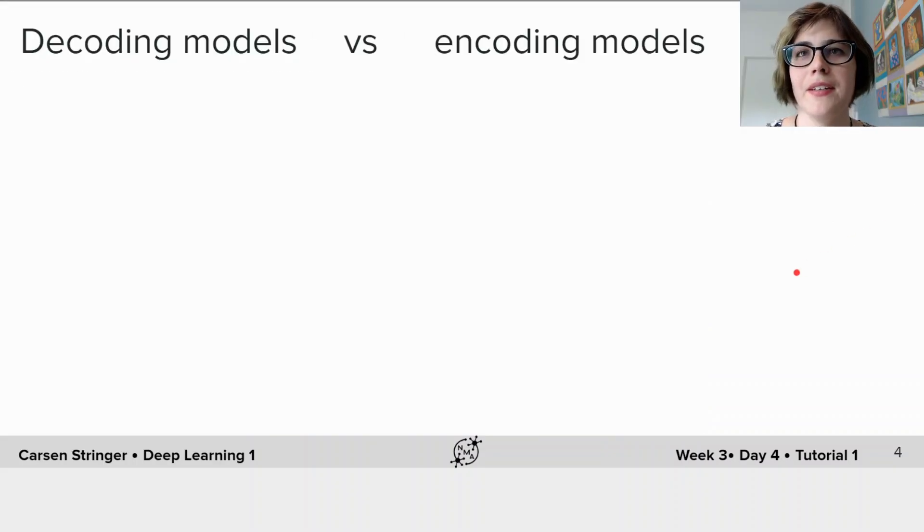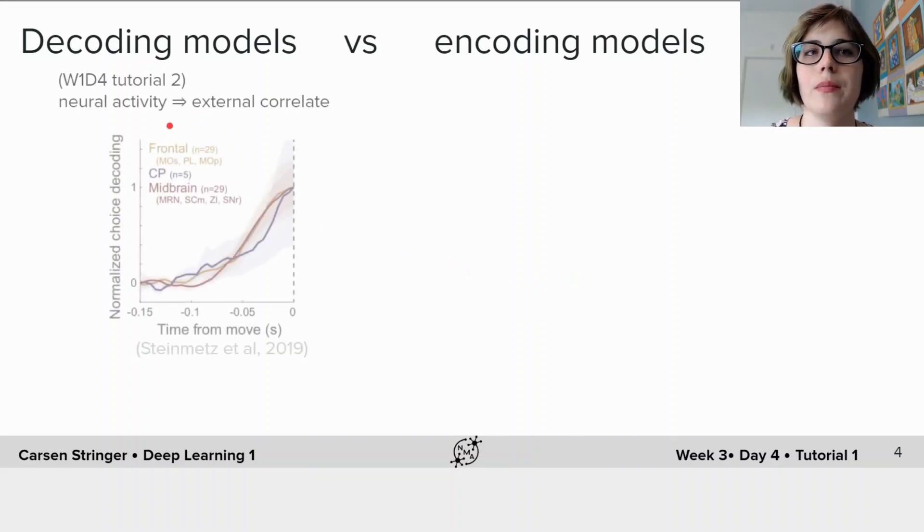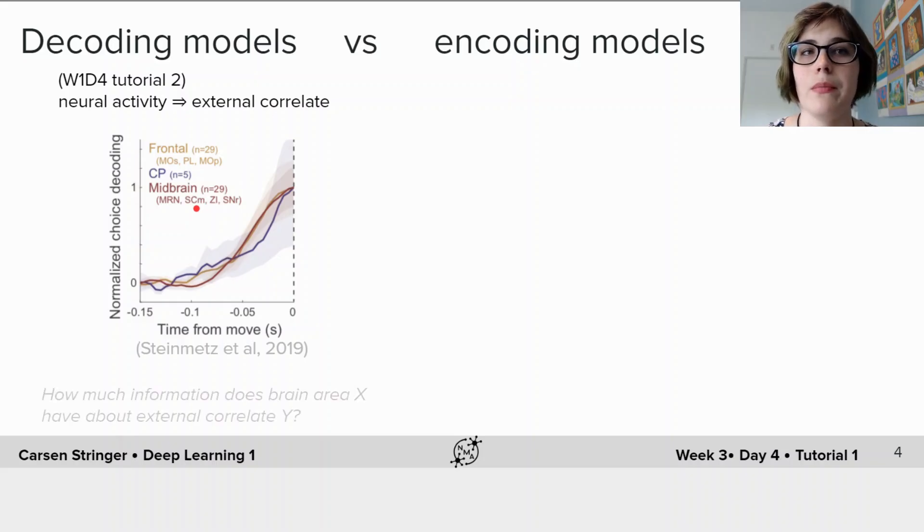Thanks, Jorge. All right, so during this course you've been introduced to decoding and encoding models. Decoding models, such as the one you developed in week one, day four, are used to predict external correlates from neural activity. In this case, you predicted the choice of a mouse in a decision-making task using neural activity from various brain areas. By doing this, you can determine how much information a brain area has about a given external correlate.